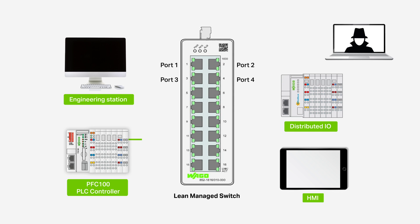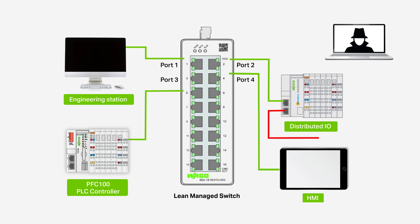Using a lean managed switch, control engineers can enable network layer filtering that restricts which devices can communicate with others on the network based on IP or MAC addresses. Allowing only known devices to communicate on the network will help prevent unapproved access.